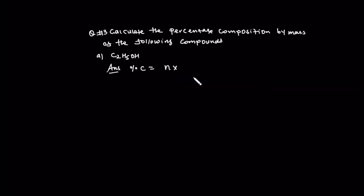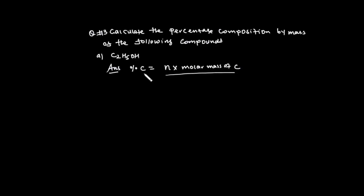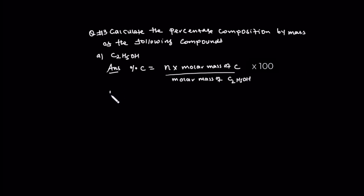Any times. Now, molar mass of the element. Okay, molar mass of carbon divided by molar mass of compound. The compound is C2H5OH.